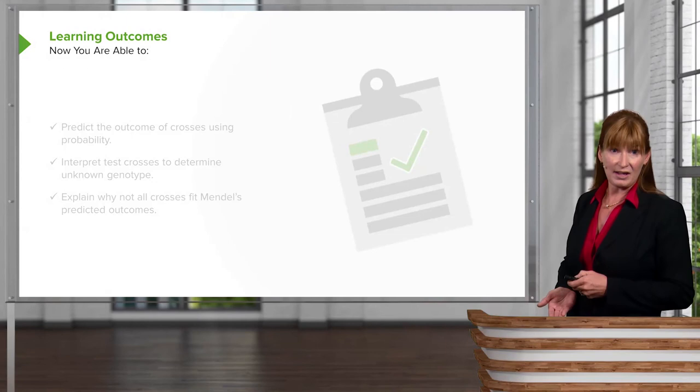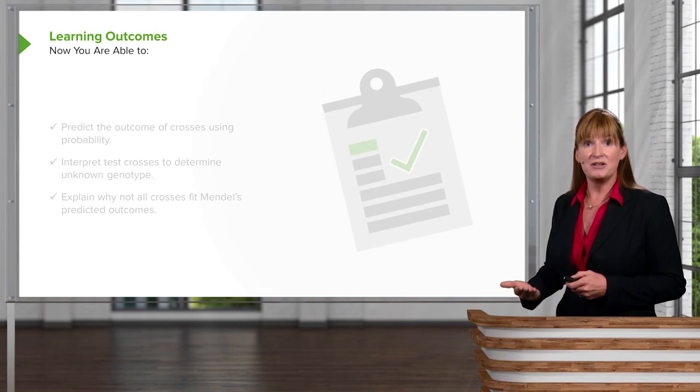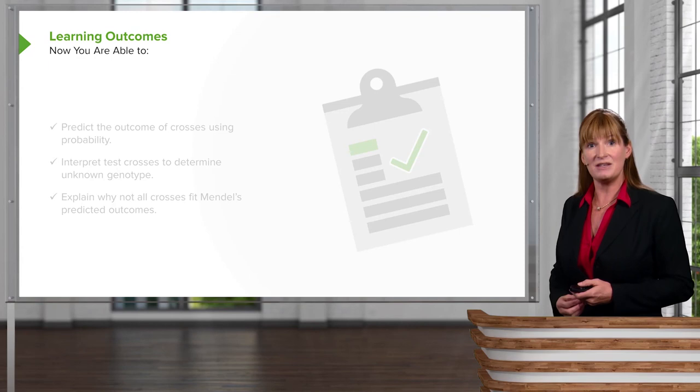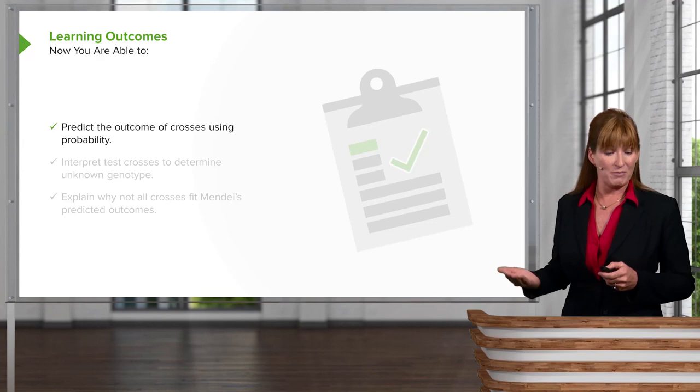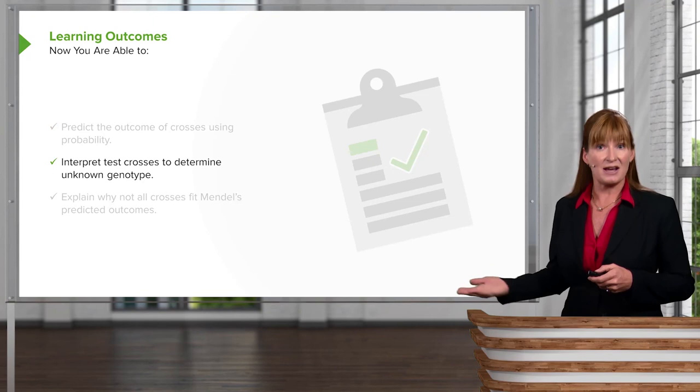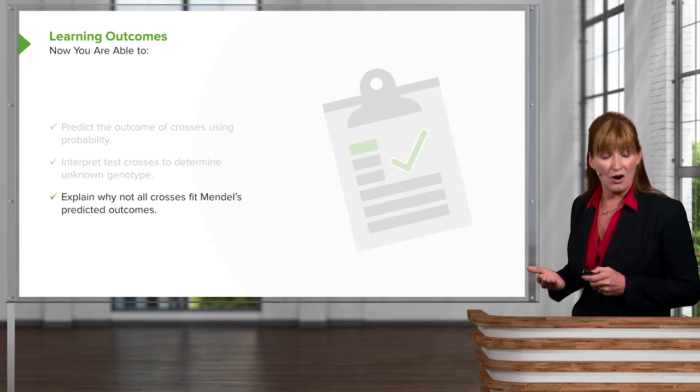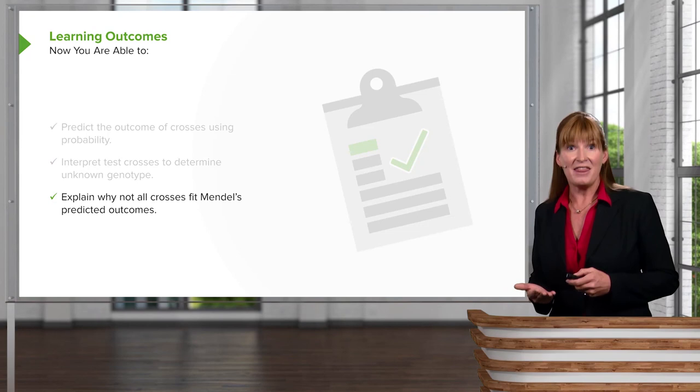In this lecture, we've explored many variations on Mendel's predicted outcomes, although each still exhibits Mendelian inheritance. By now, you should be able to predict the outcome of crosses using probability methods, interpret test crosses to determine an unknown genotype, and explain why not all crosses fit Mendel's predicted phenotypic outcomes. Thank you for your attention, and I look forward to seeing you in the next lectures on genetics.